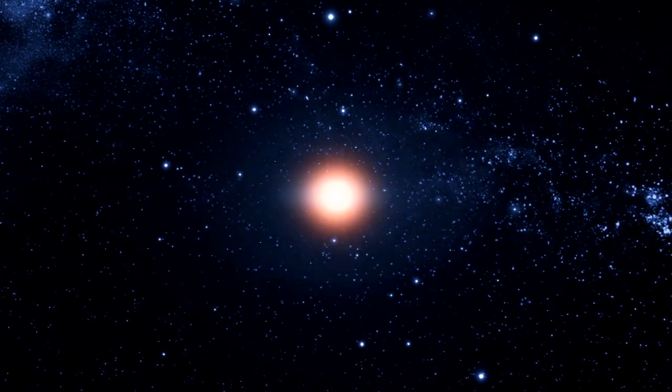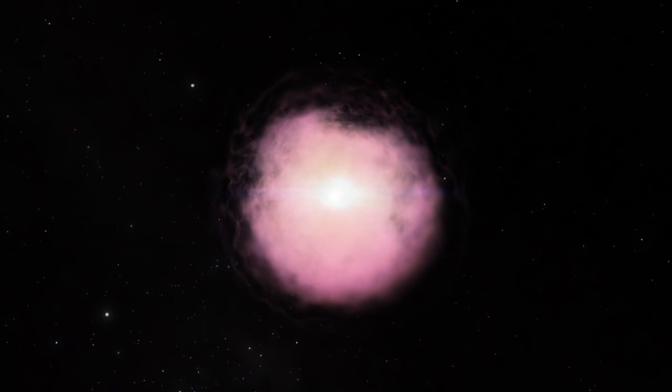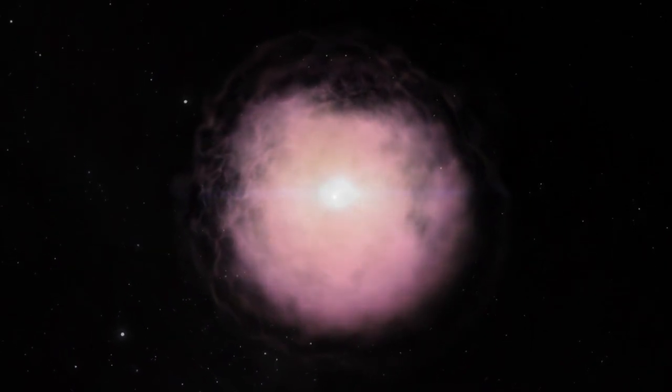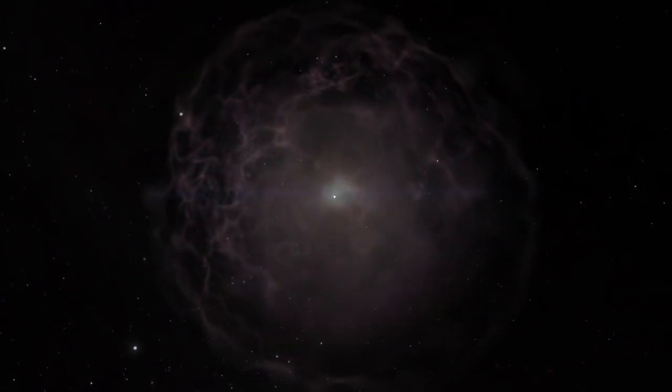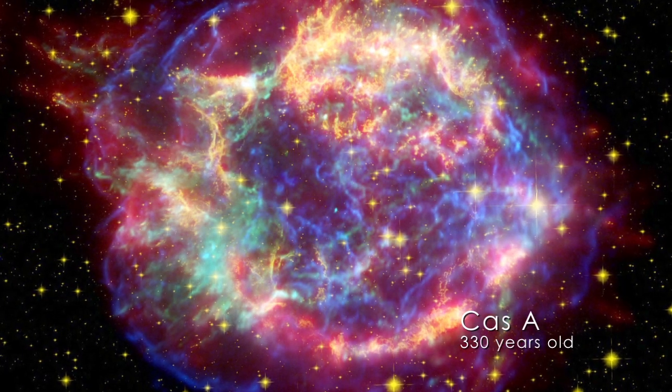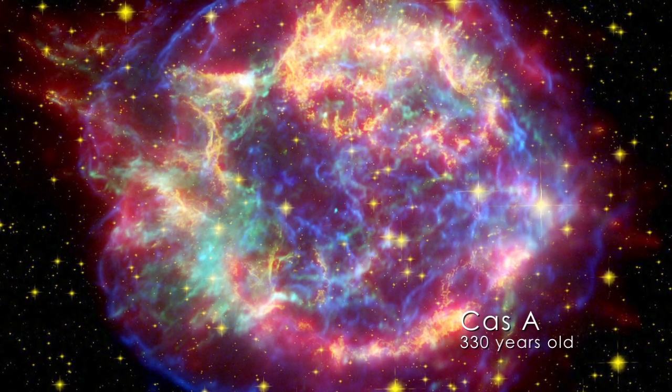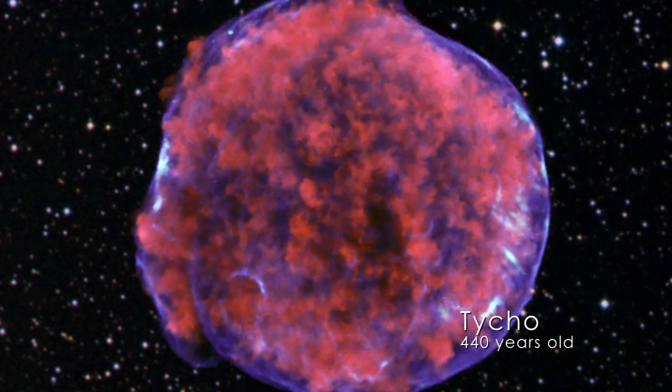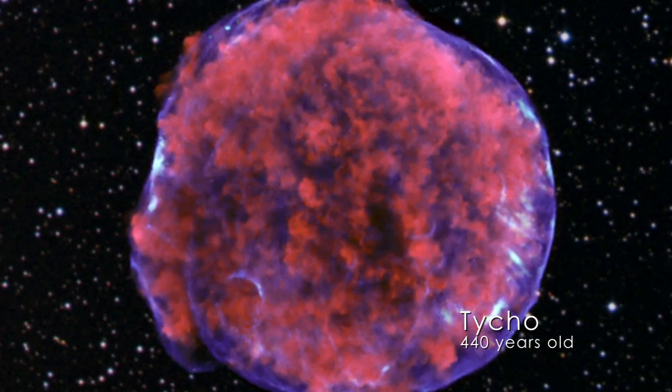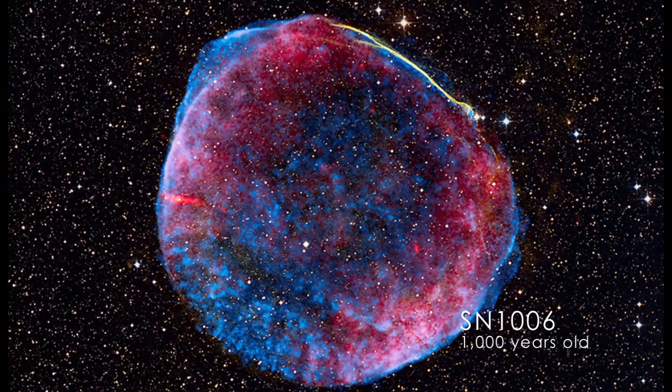About two or three times a century, a massive star in our galaxy explodes. The star's core may survive as a neutron star or a black hole, but the rest of it rushes into space as swiftly expanding debris behind a powerful shockwave. As the supernova remnant grows, it sweeps up interstellar gas and gradually decelerates. Yet even thousands of years later, its imprint on the galaxy remains impressive.